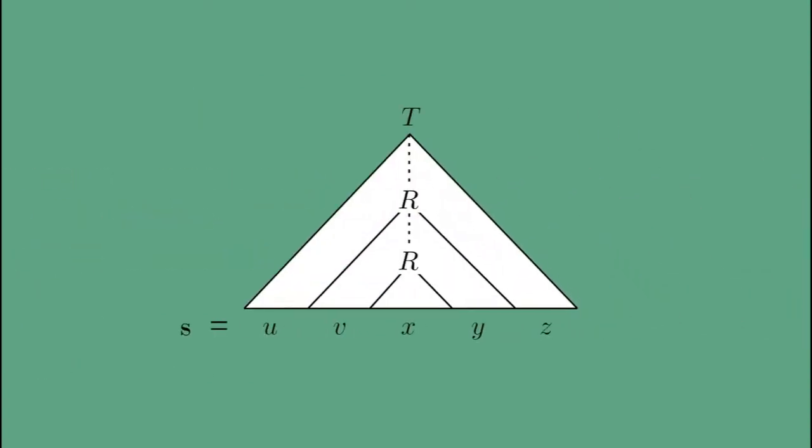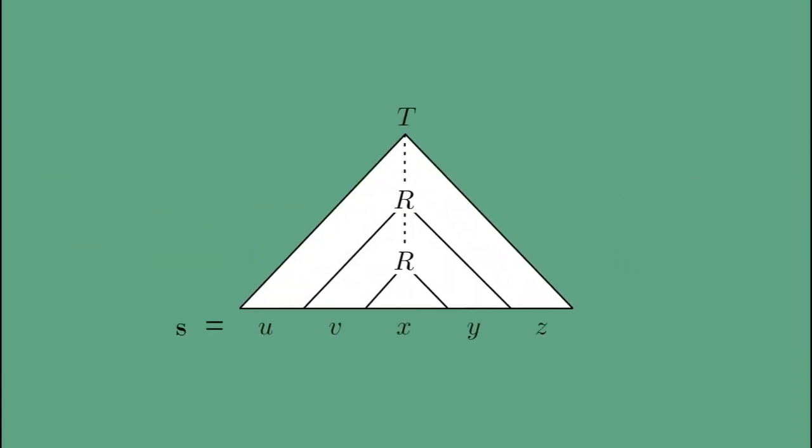We divide S into U, V, X, Y, and Z. Each occurrence of R has a subtree under it generating a part of the string S. The upper occurrence of R has a larger subtree and generates V, X, Y, whereas the lower occurrence generates just X with a smaller subtree.